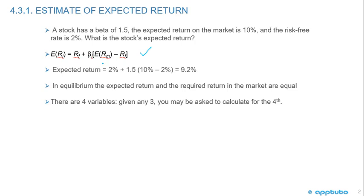There are four variables in the CAPM formula. Given three, calculate the fourth — that is the typical situation we need to handle.